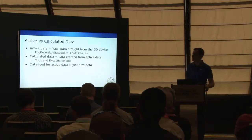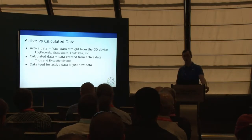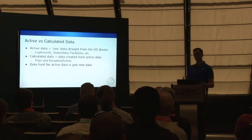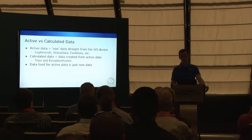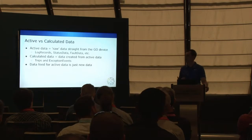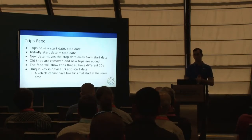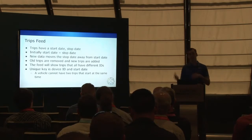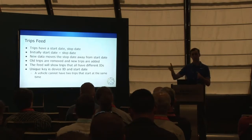There are two kinds of data you can get through the data feed: active data and calculated data. Active data — I think of it as raw data — is measurements from the GO device sent to MyGeotab. Things like speed, GPS position, and engine readings: once reported and saved, that data never changes. Calculated data, on the other hand, is derived from active data and will change as new active data arrives. Trips and exception events are the primary examples. For trips, we get GPS data, see a vehicle start moving, and create a new trip with a start and stop date — initially both are basically the same.